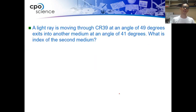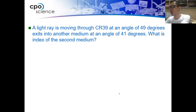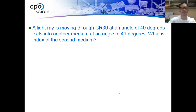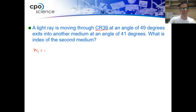Let's solve another one. A light ray is moving through CR39 at an angle of 49 degrees and exits another medium at an angle of 41 degrees. What is the index of refraction of the second medium? We need to find the index of refraction of the second medium. CR39 has an index of refraction of 1.498.